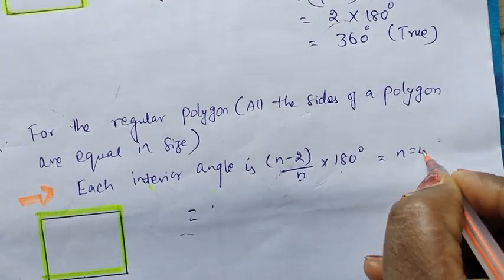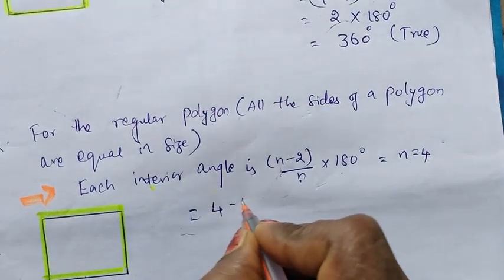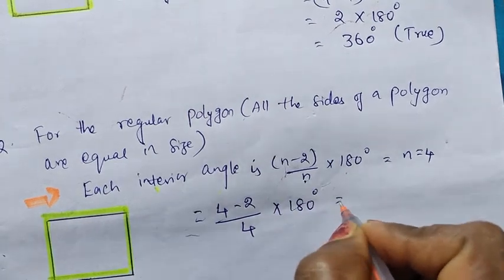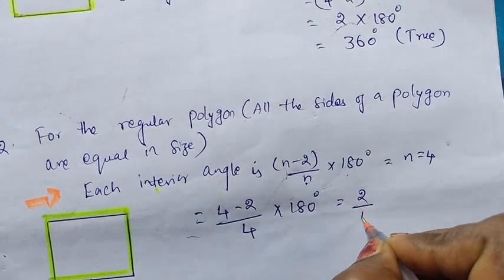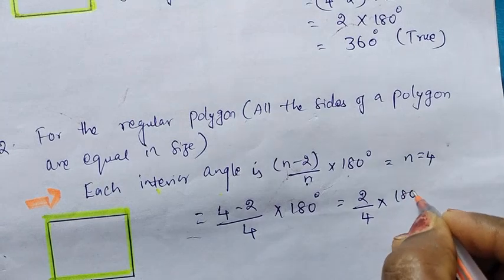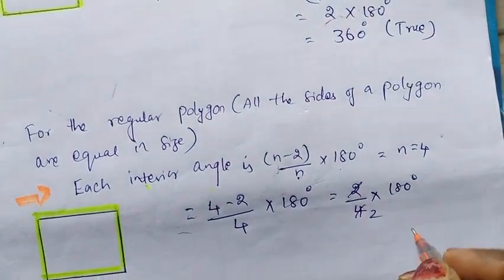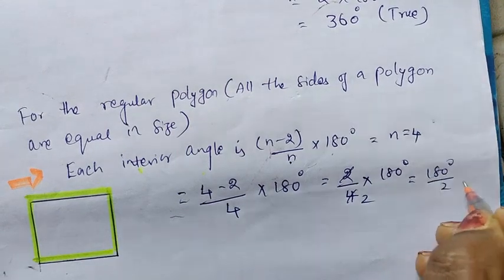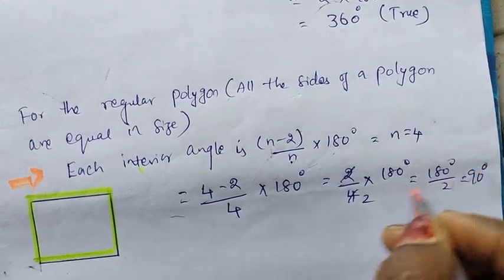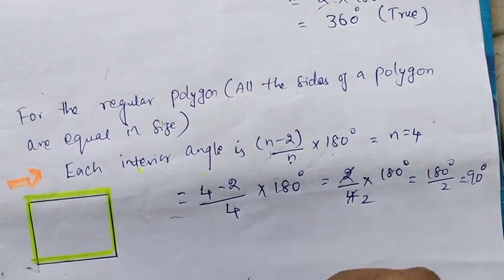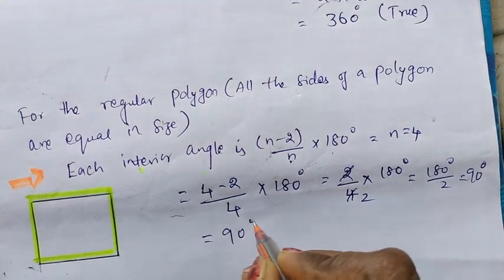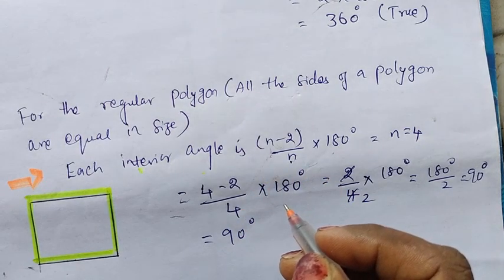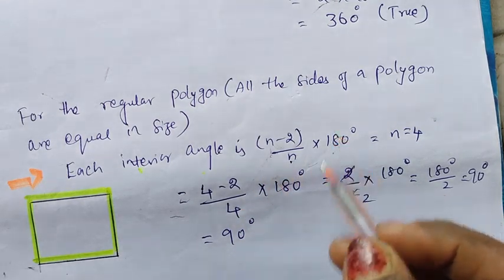n equals 4. So, 4 minus 2 divided by 4 into 180 degrees. That gives 2 divided by 4 into 180 degrees, which equals 180 degrees divided by 2, equal to 90 degrees. So 90 degrees is the interior angle, and it satisfies the condition. For a regular polygon, all the sides are equal and each interior angle equals 90 degrees.